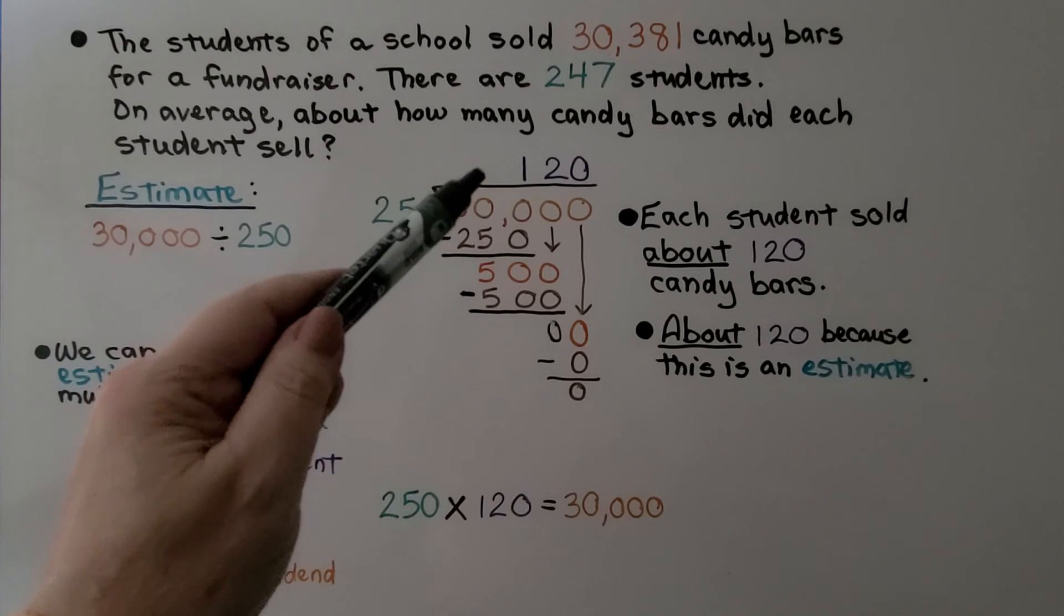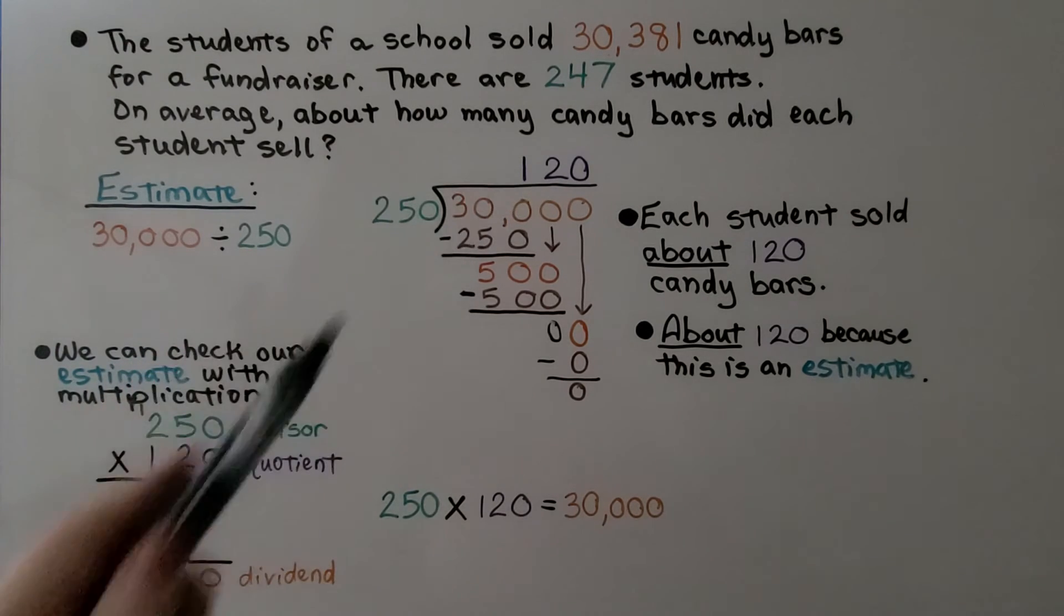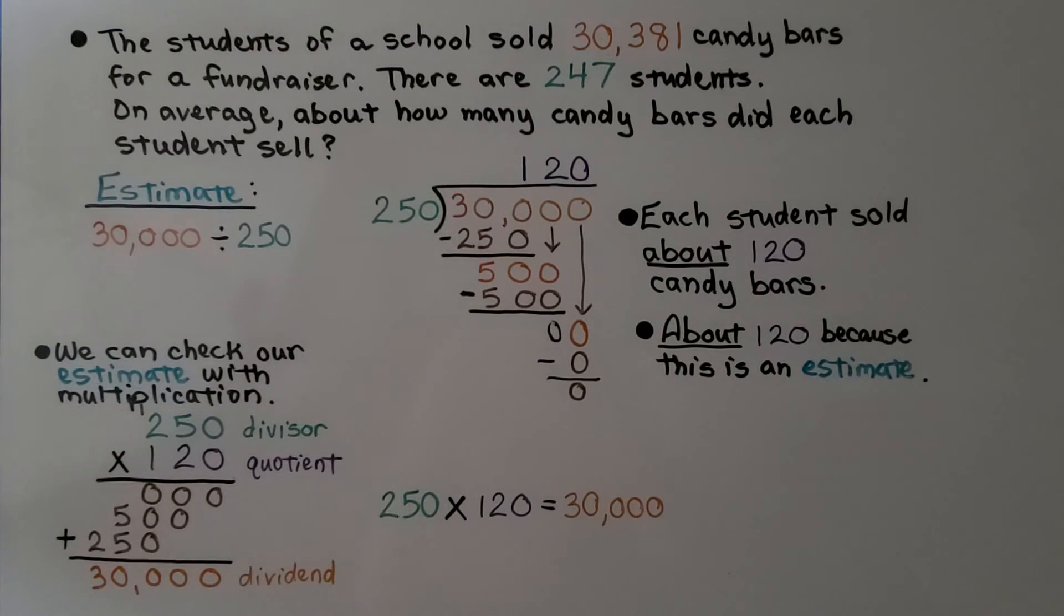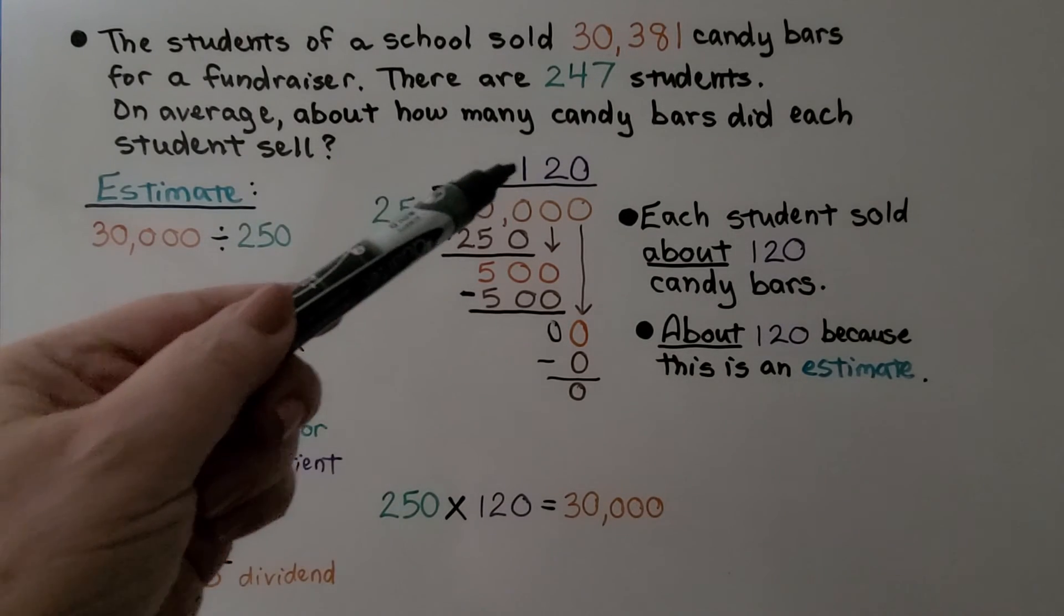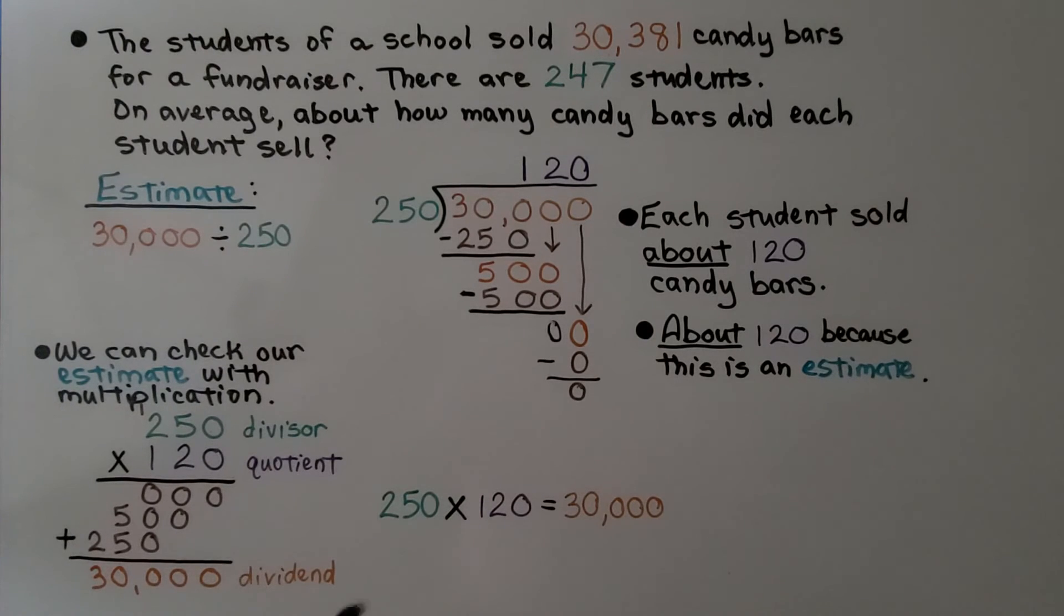That tells us each student sold about 120 candy bars, and about 120 because this is an estimate. We're using the word about, it's not exact. And we can check our estimate with multiplication. We multiply the divisor by the quotient, and if it equals the dividend, we know we got it right. And we got 30,000, we know we did it correctly.